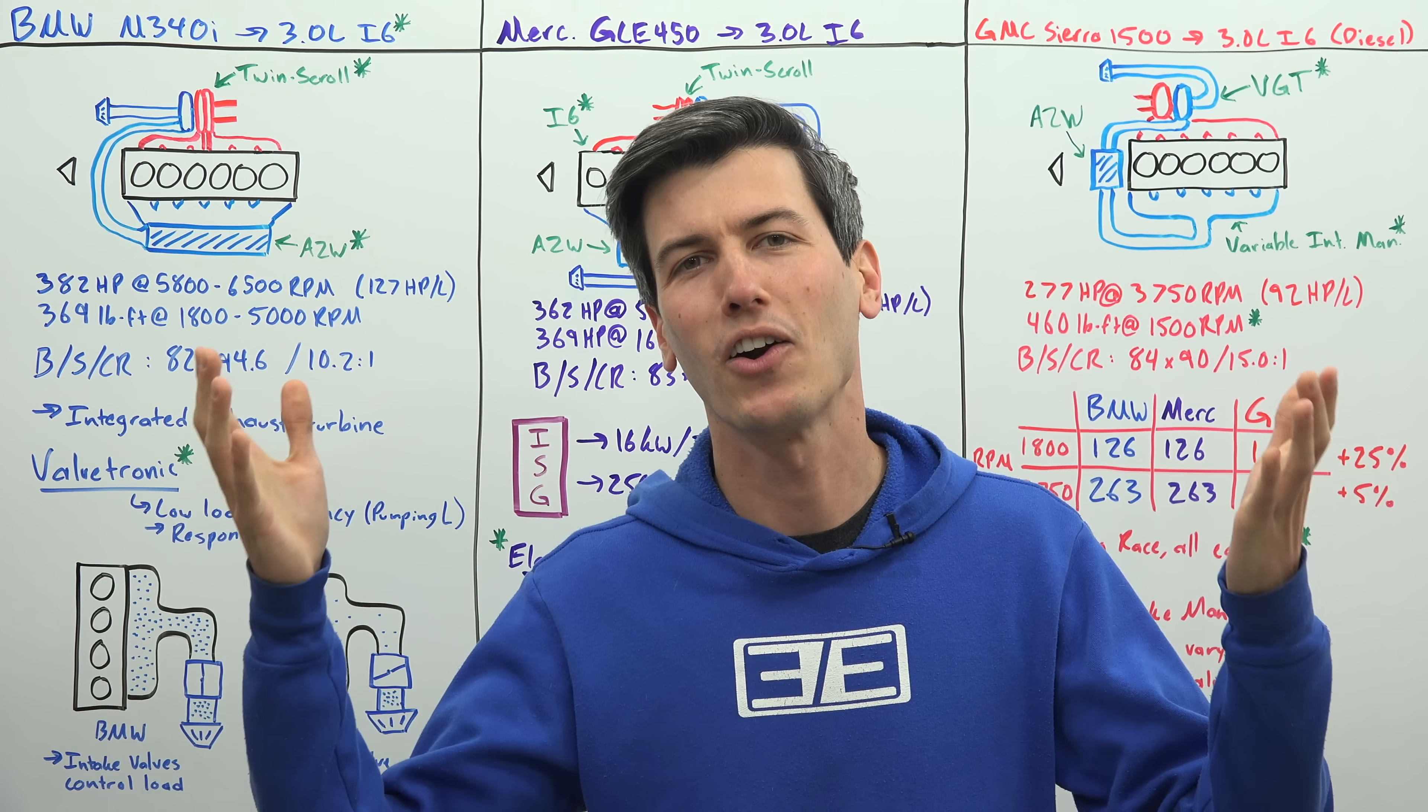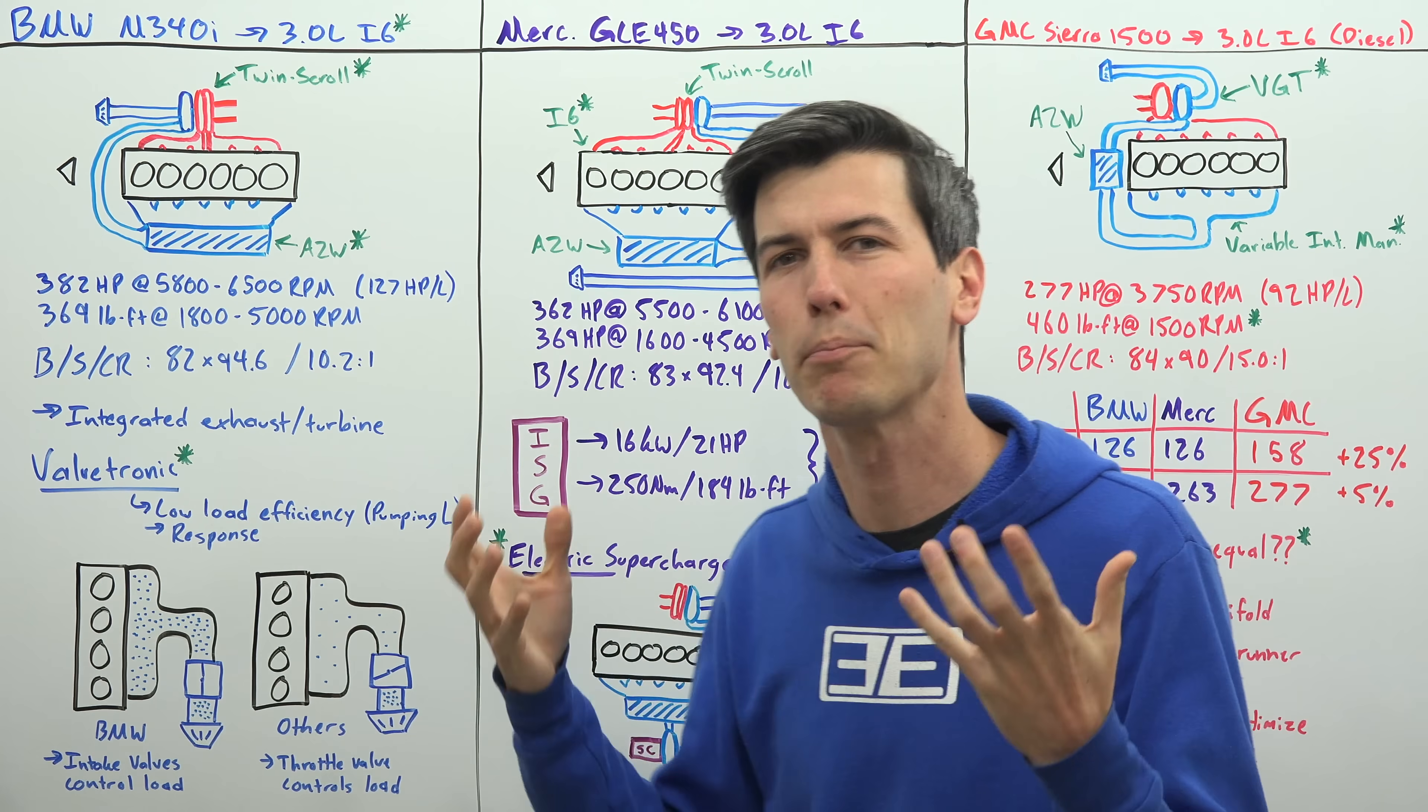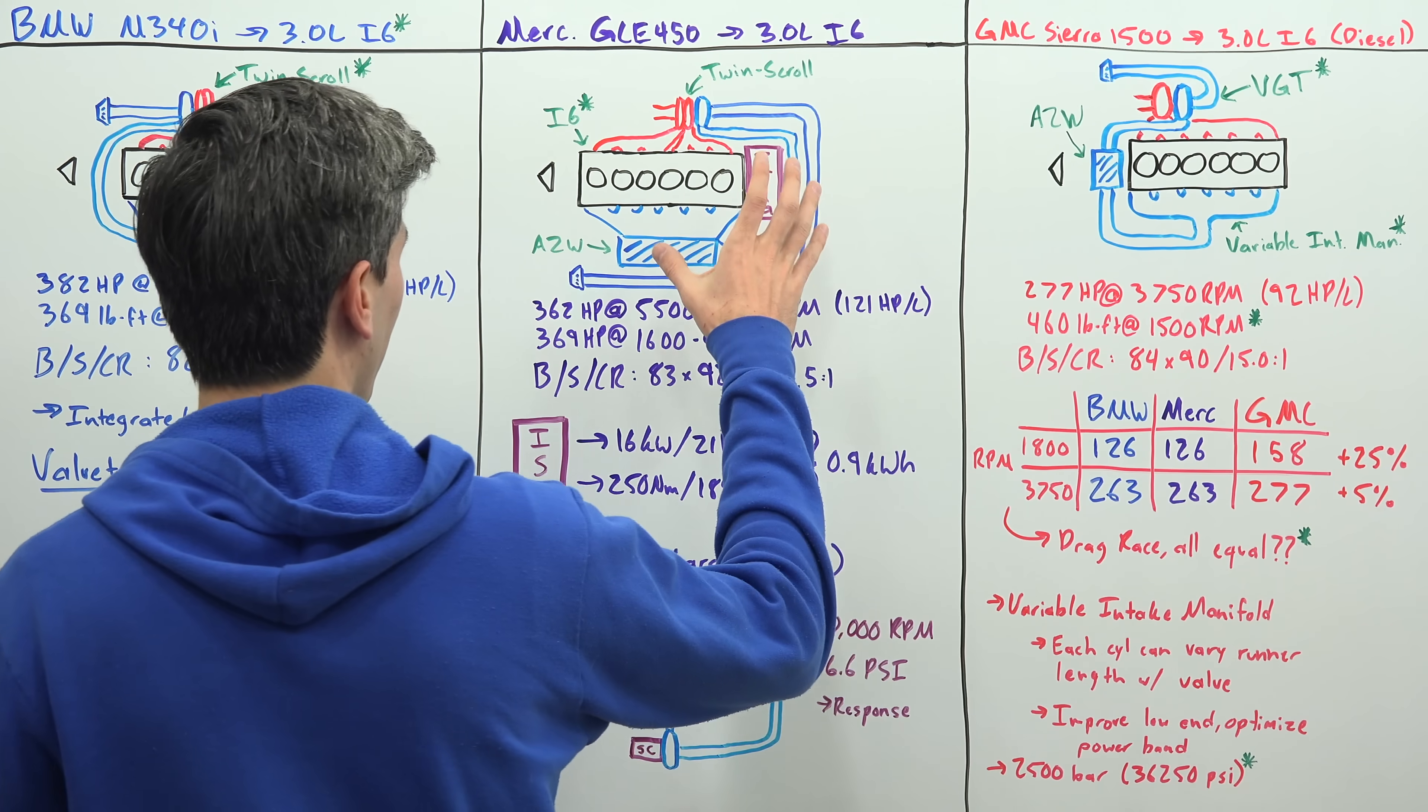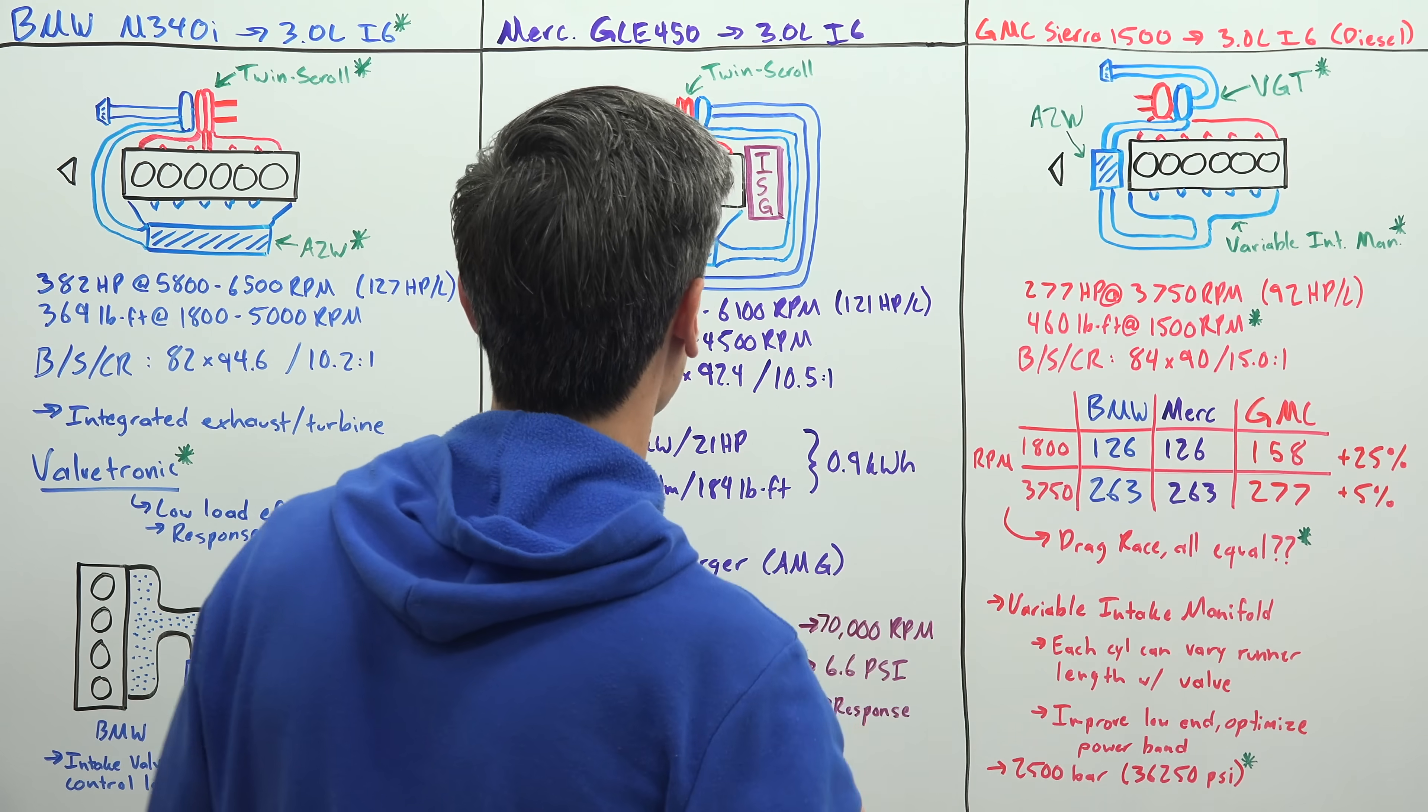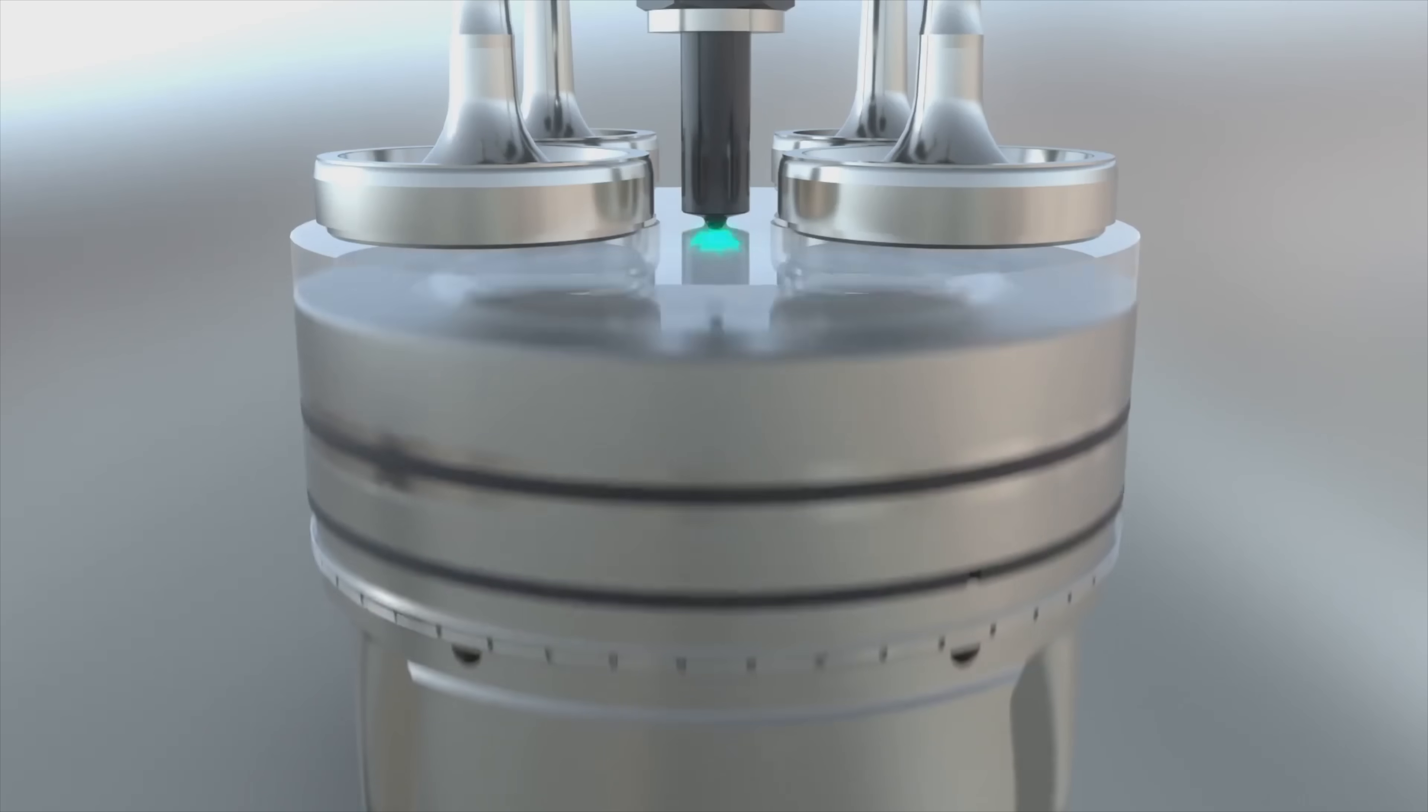Yes, they are all 3 liter inline six-cylinder engines, but they all go about making power in quite different ways. The BMW is entirely gasoline based, the Mercedes is a gasoline hybrid, and the GMC Sierra actually uses a diesel engine. All of them have the same displacement, the same style engine, inline six, of very different styles here.